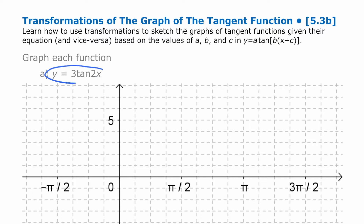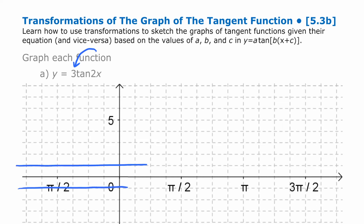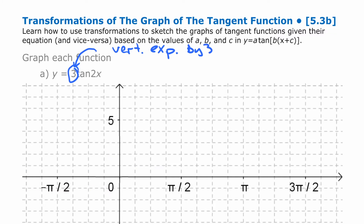For this first function, there are two different changes. We have a number in front — that a value. Now you might have gotten the habit for sine and cosine of just thinking of that number as the amplitude. The reason it works for sine and cosine is because the amplitude is normally one, so when you put a three in front it becomes three. Any point that is one away ends up being three times as far away, so really what's happening is a vertical expansion by a factor of three. It's not just the max and min that change — it's every single point.